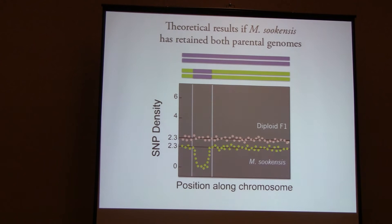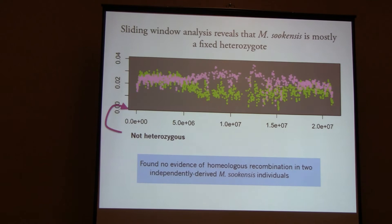What do I expect to see in my whole genome sequence data? If there's been no homeologous recombination, I expect to see the tetraploid looks exactly like a diploid F1. If there has been, there should be large chunks where SNP density drops to zero. When I look at my tetraploid — the chartreuse — compared to the pink representing the two diploid progenitors, you see similar levels of SNP density at the ends of chromosomes. All my chromosomes look like this across both individuals, suggesting no evidence of historical homeologous recombination in these two samples.